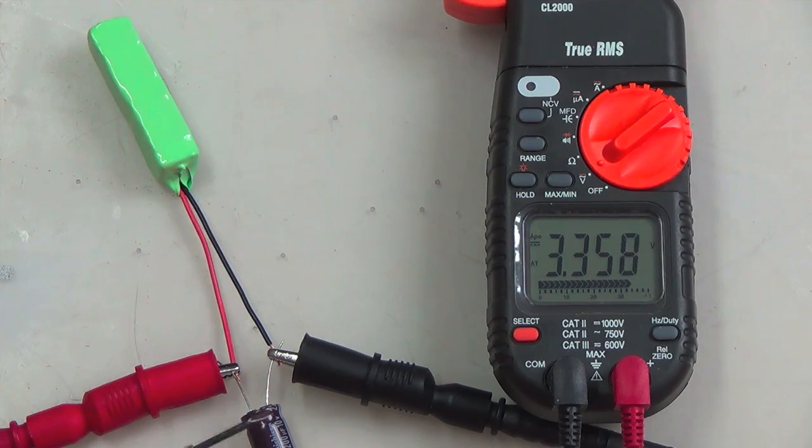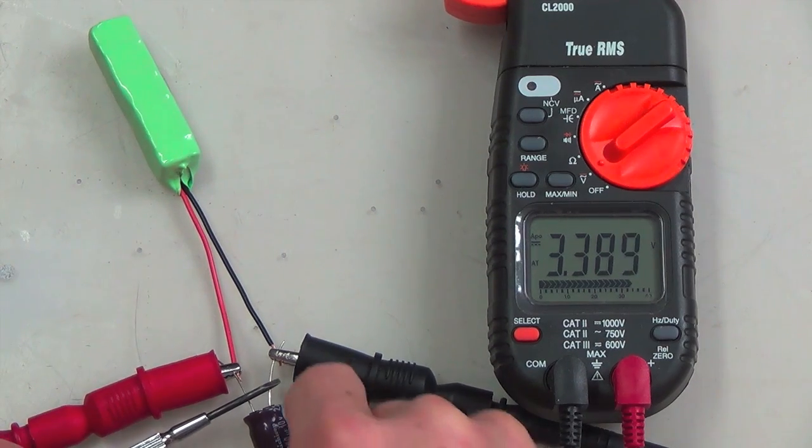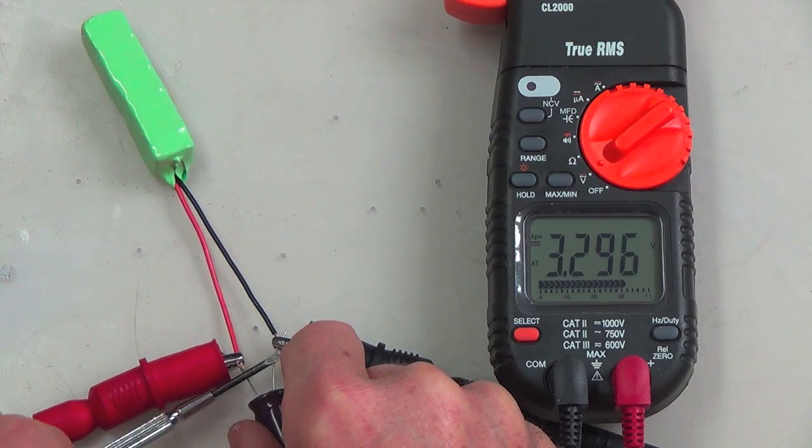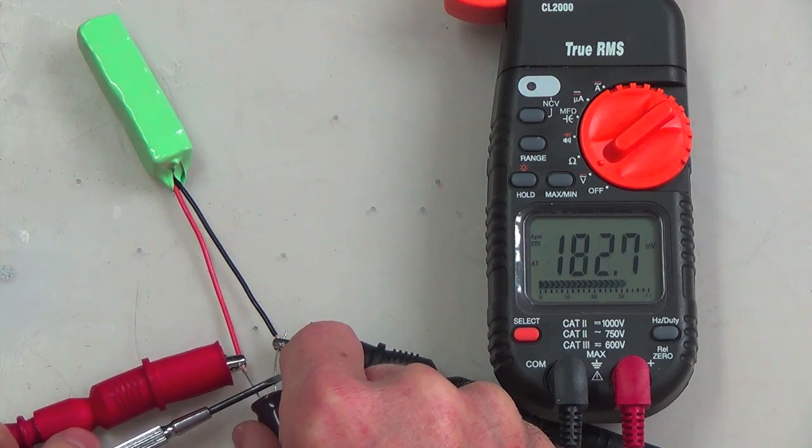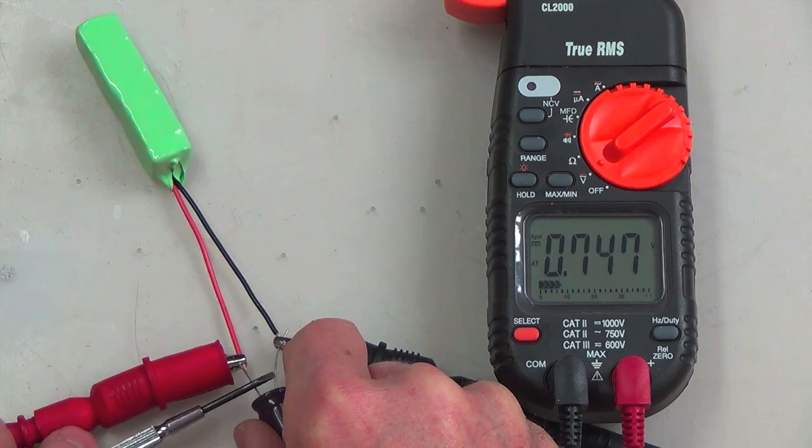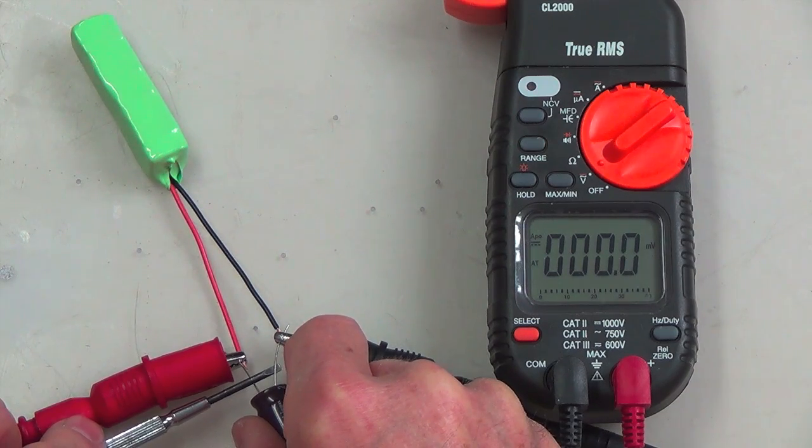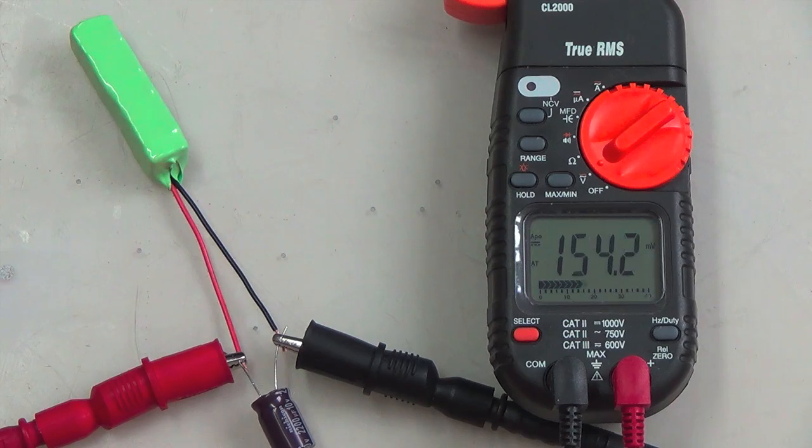All right, I just connected the cap and you can see that it's charging up, but I'm going to put a dead short on it so you can see what it does from zero. So let's get that across the leads here. There we go. Okay, so we're all the way down to zero. So it's up to—well, you can see where it's going.